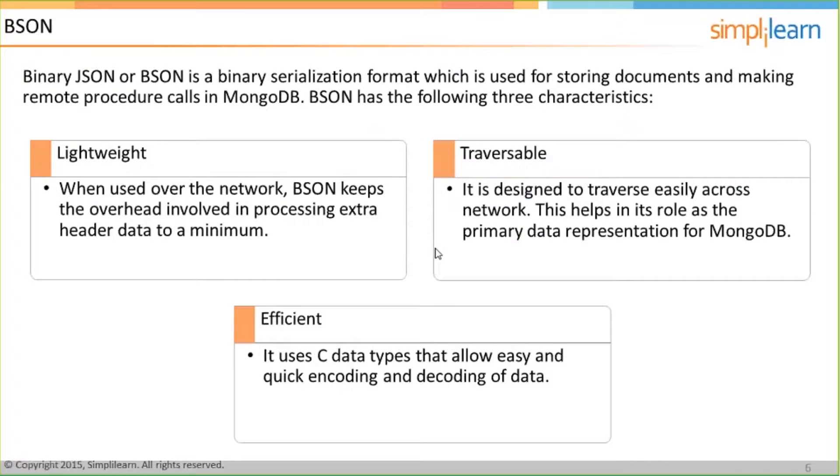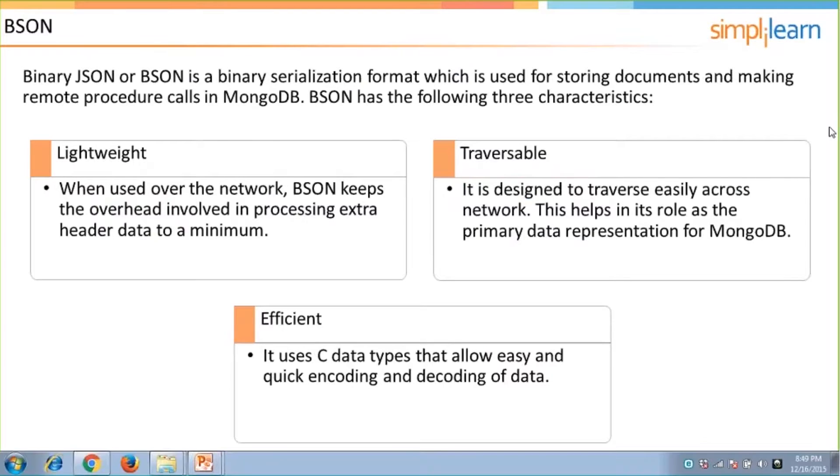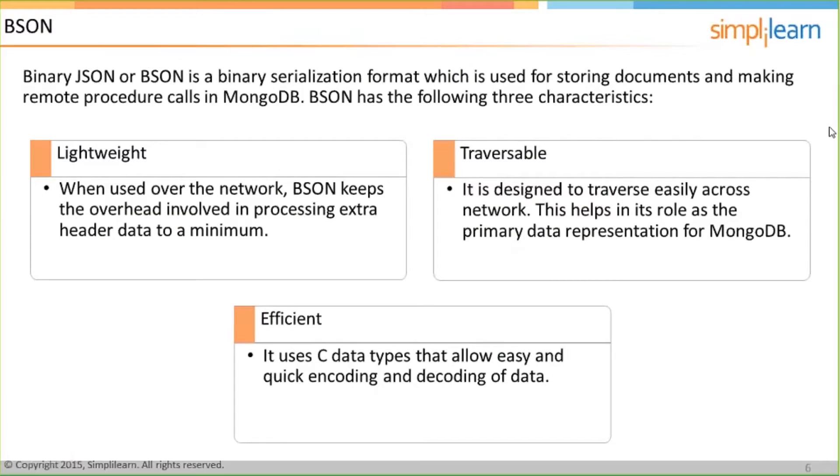BSON is lightweight, BSON is traversable, BSON is efficient. So why is it lightweight? Because when you use over the network, BSON is internally how a MongoDB document is stored.